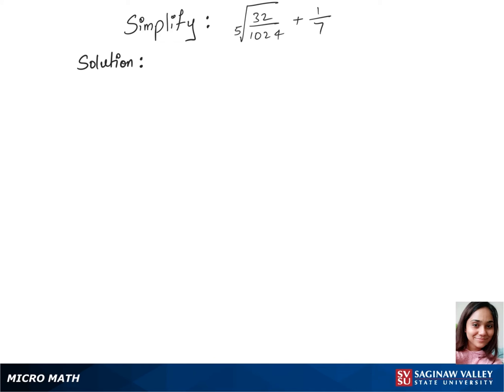We'll simplify this question by first separating the fifth root of the first part between numerator and denominator. So that's fifth root of 32 over fifth root of 1024, plus 1 over 7 remains the same.